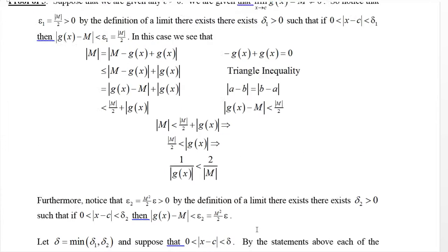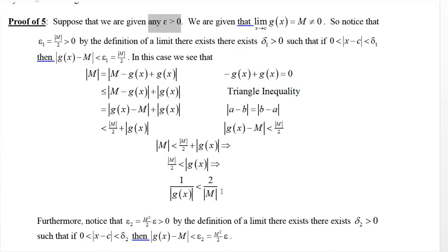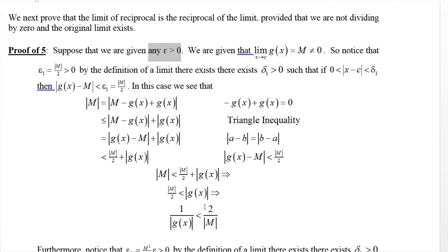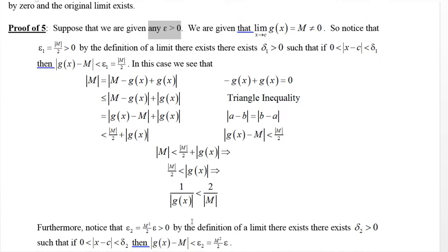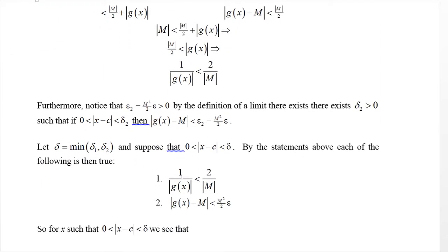Now, for our delta: we started with our original epsilon and generated two other deltas, delta_1 and delta_2. We want delta to be the minimum of delta_1 and delta_2. Suppose |x - c| is between 0 and delta — that means it's less than both delta_1 and delta_2, so both conclusions hold: both inequalities are true.